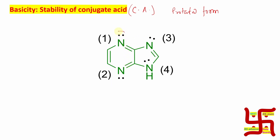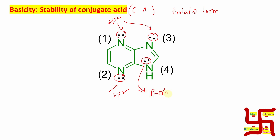Lone pair 1 is in an sp2 hybridized orbital and not in conjugation with the benzene ring's electron delocalization. The same thing is true for this one — sp2. If you look at nitrogen 3, it is also in sp2 hybridization and not in conjugation with the benzene ring. But if you look at nitrogen 4, this lone pair is not in an sp2 hybridized orbital — it is actually in a p orbital, and it is in resonance.